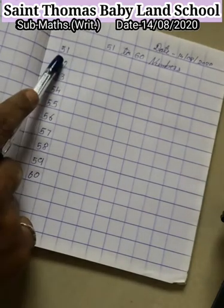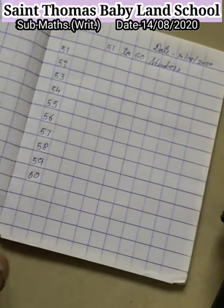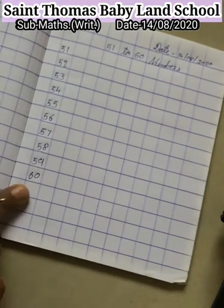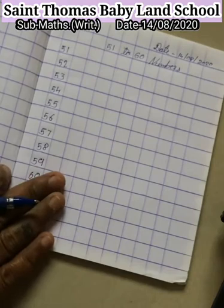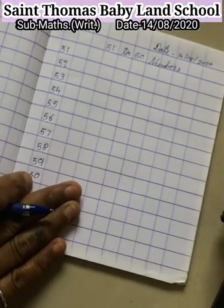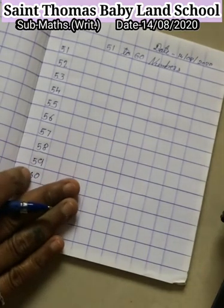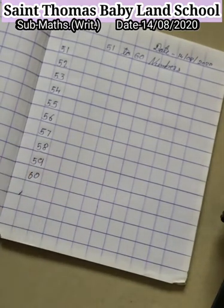This 51 to 60 — you have to write in your square line book like this way. Okay children, bye bye, have a great day.